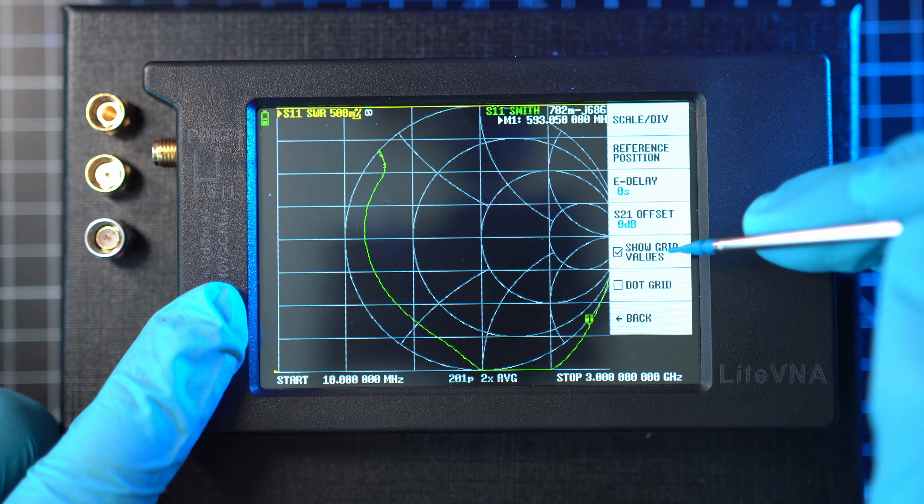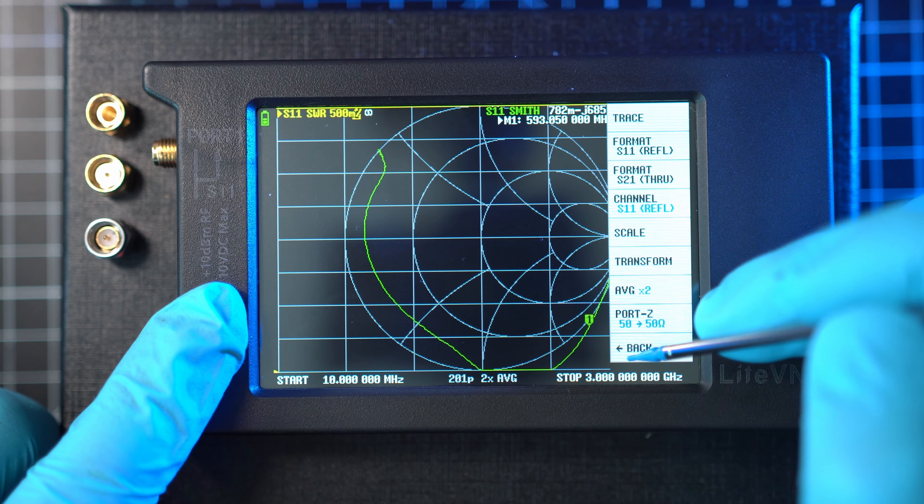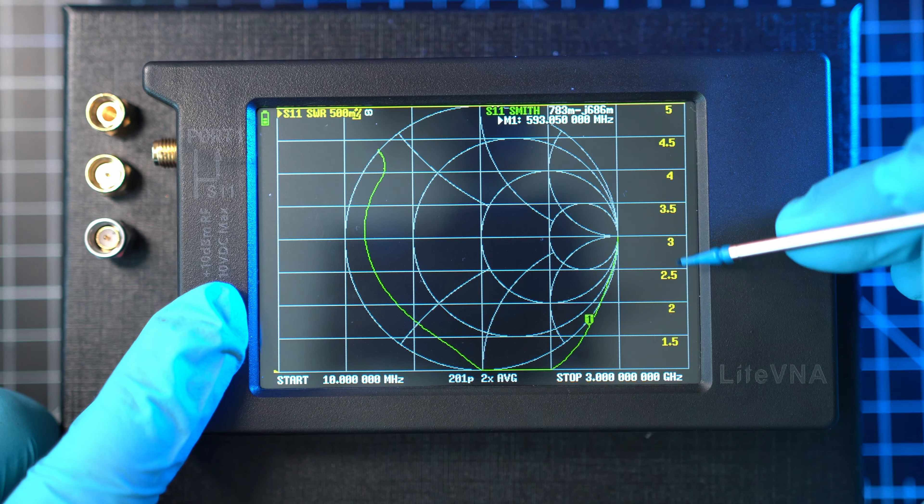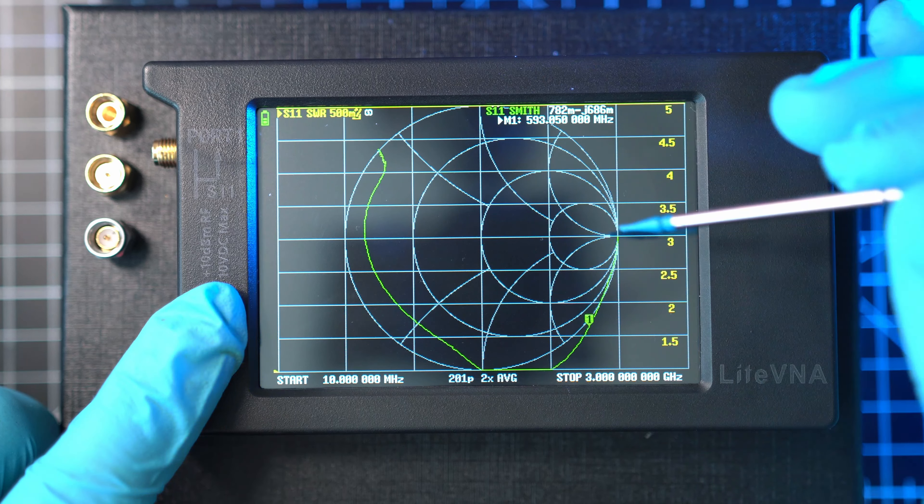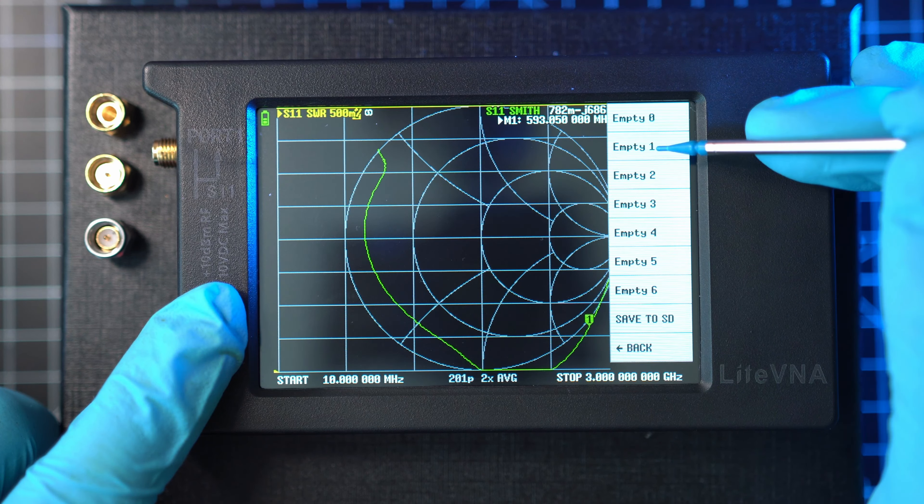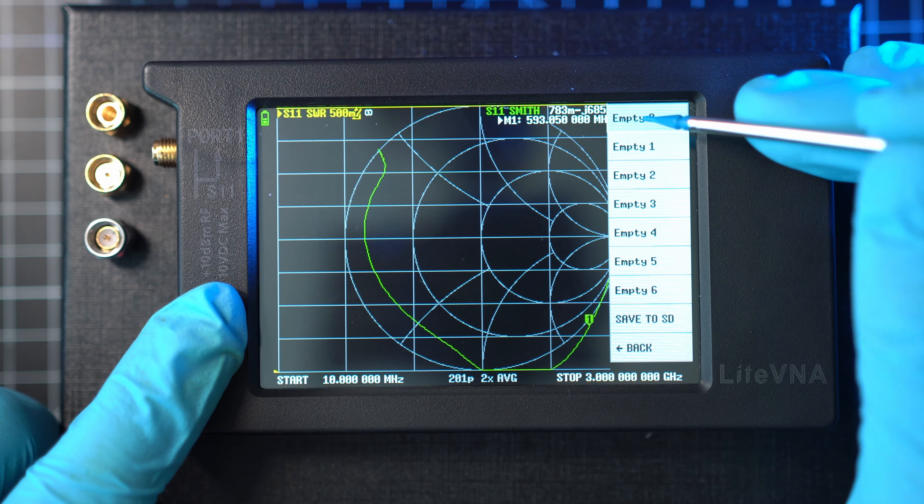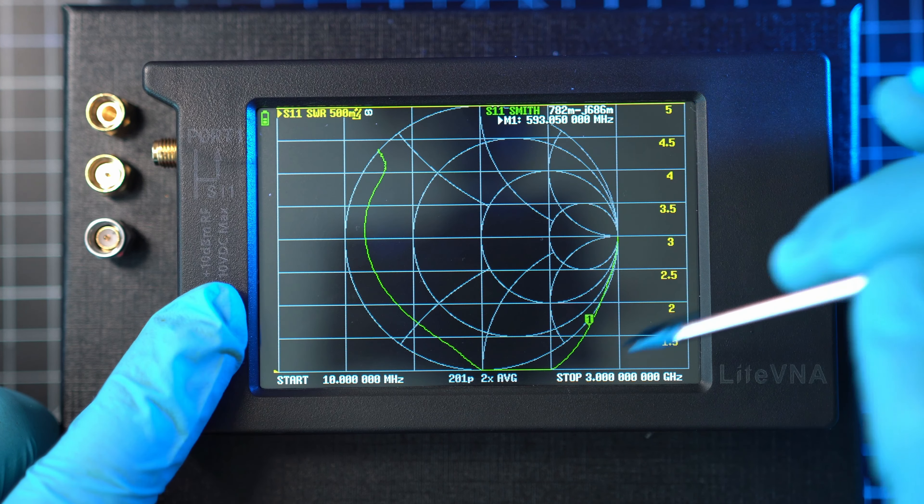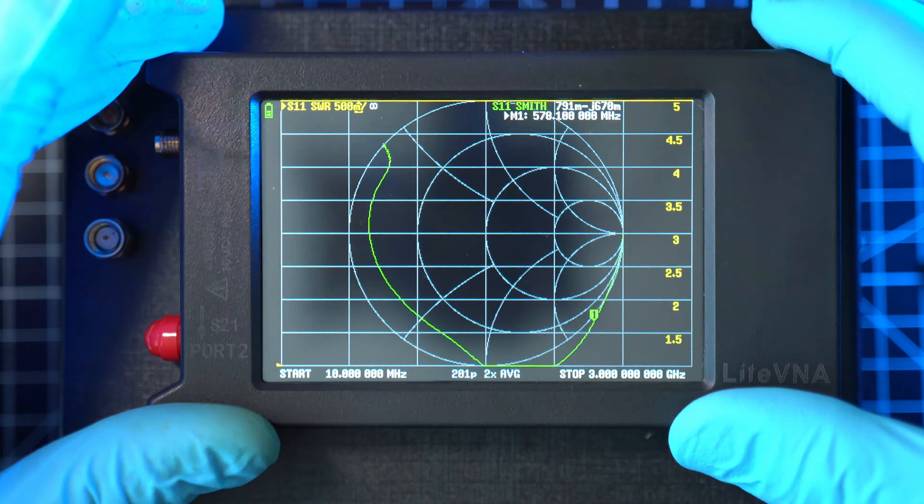Bonus step is to turn on show grid values. This will make chart slightly more readable. Now, in order to save this, we have to go calibrate, save and save it. This will make sure you don't have to set it up with every boot of the LiteVNA or NanoVNA.